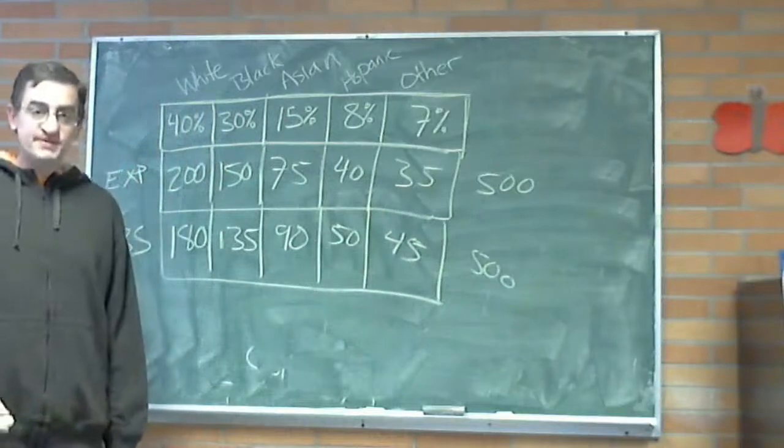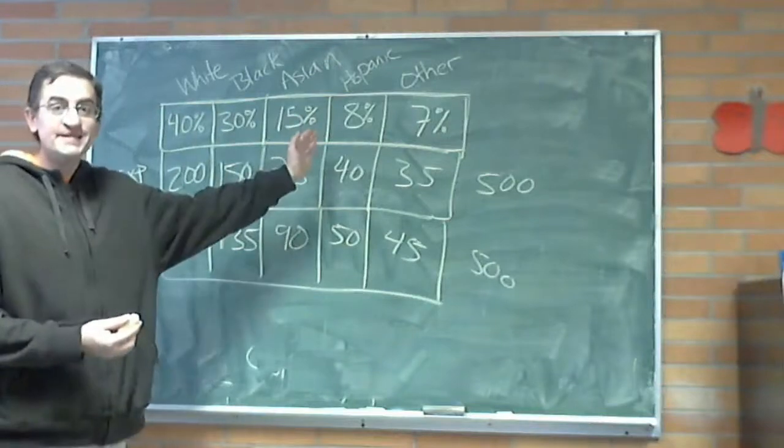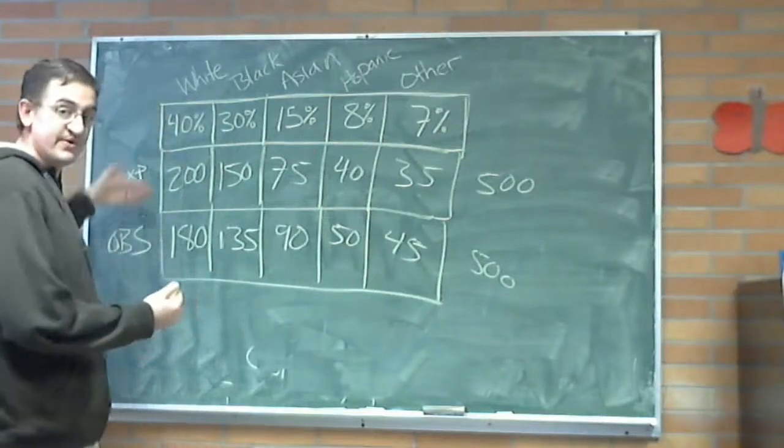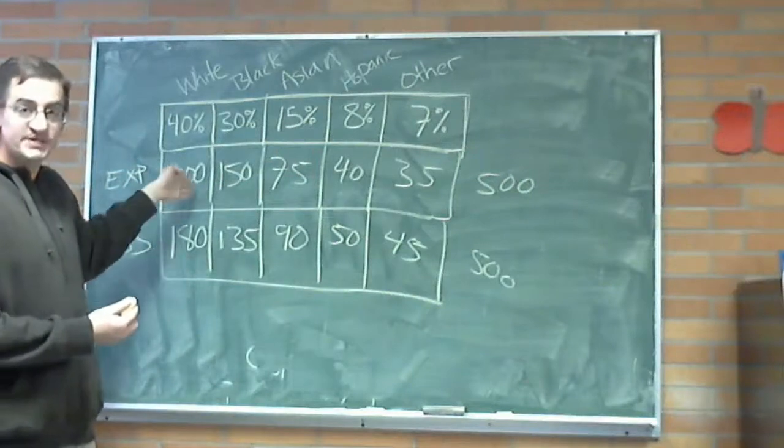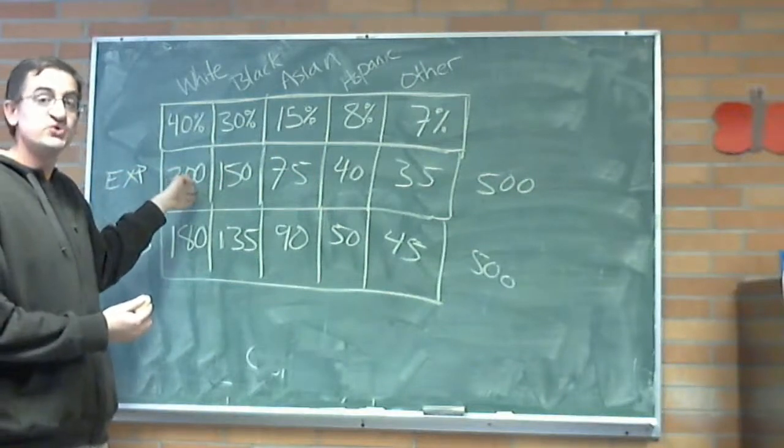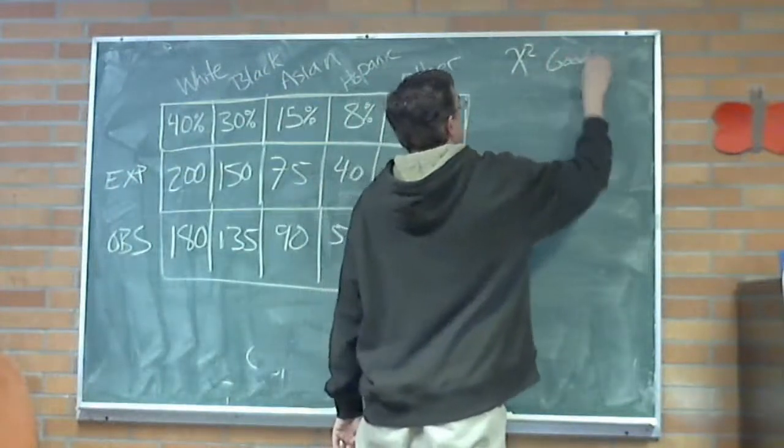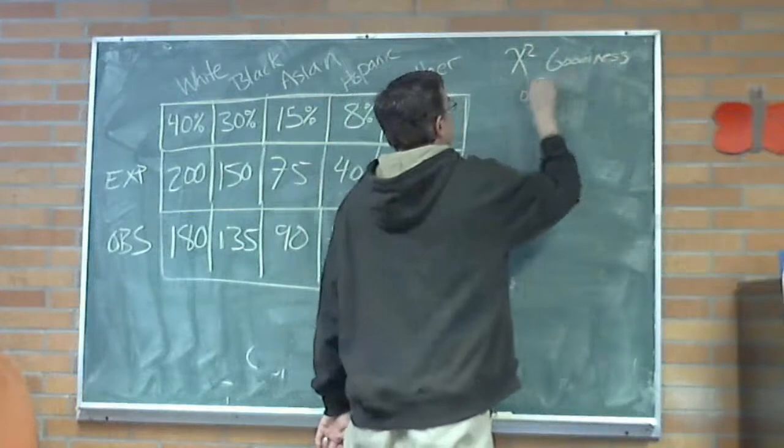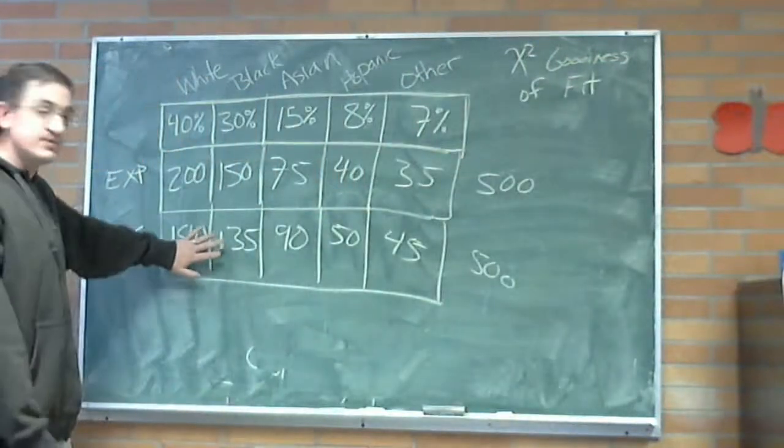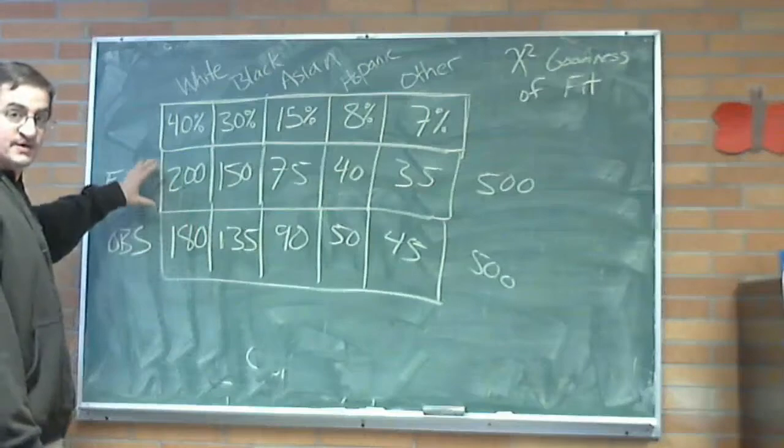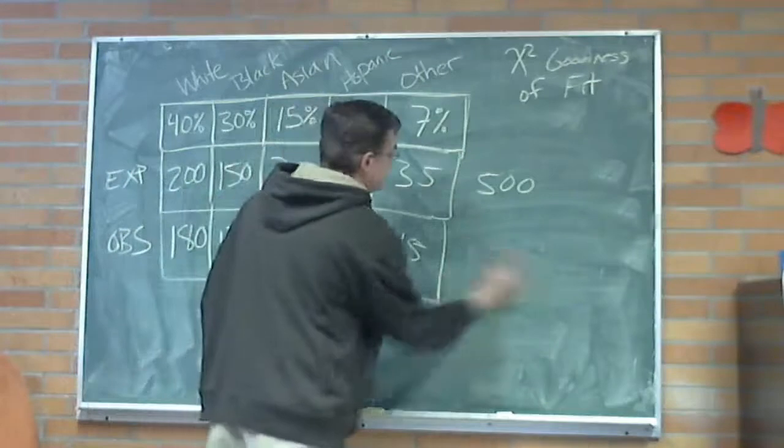Now, what makes this different than what we did in the last chapter is, we're not asking, is your race independent of some other variable here? We're just saying, do these values match what we expected? This is called a goodness of fit test. It's a chi-squared goodness of fit.